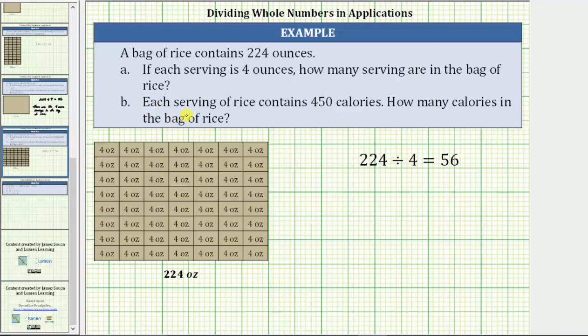Part B: each serving of rice contains 450 calories. How many calories in the bag of rice? Again, each four-ounce serving has 450 calories.